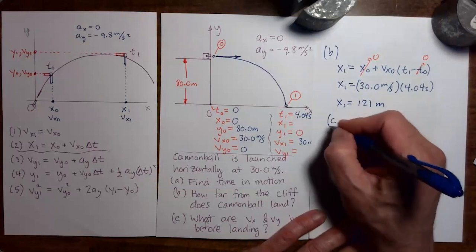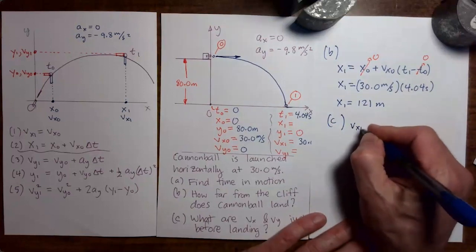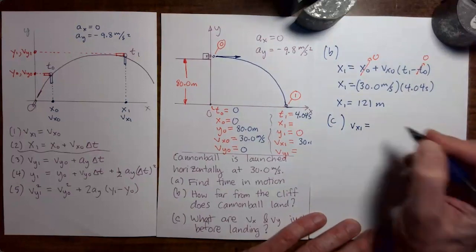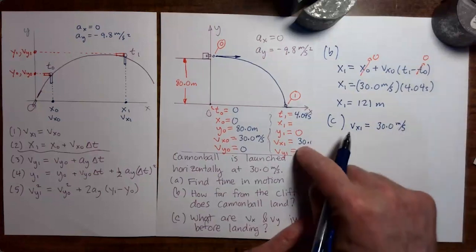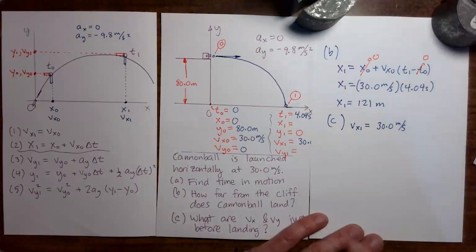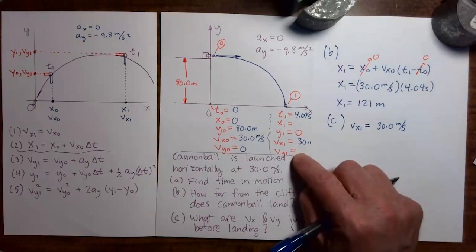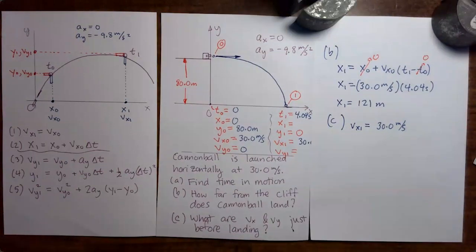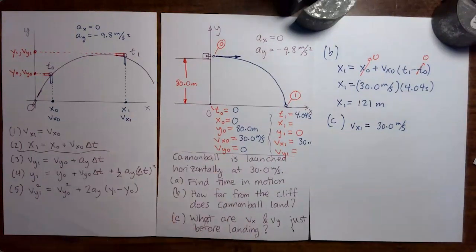Okay, part c. What are the x and y components of the velocity before landing? So the x component of the velocity right before landing is 30 meters per second. I folded the paper in a way that hides that, but it's 30 meters per second. We saw that earlier. Now we have to find the y component of the velocity just before landing. Go through the list of equations that has vy1 in it, but everything else is known. Try that on your own and then rejoin the video.